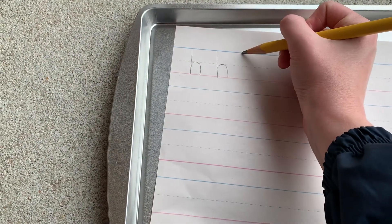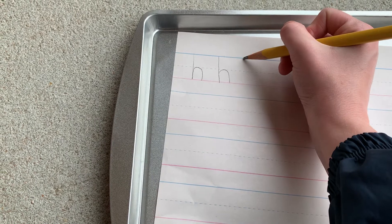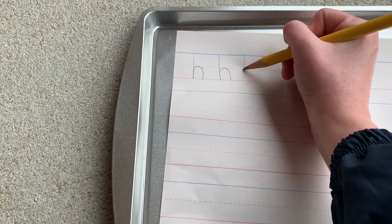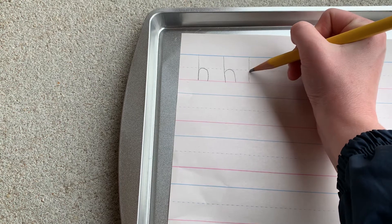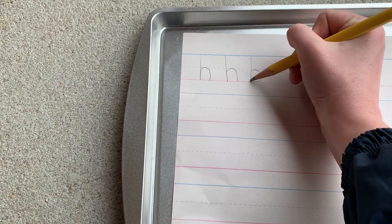We start on that top line because it's tall like h. B drops down, bounces back up, and around the bats.